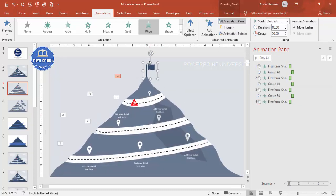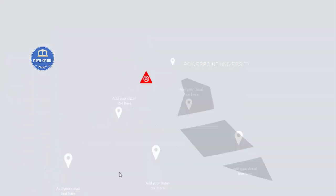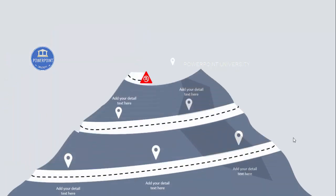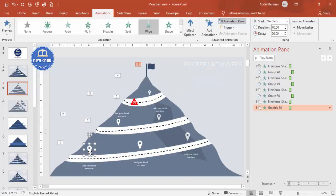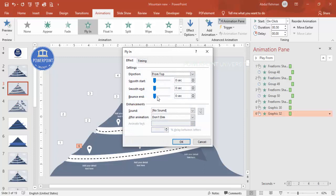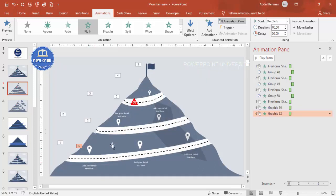For the flag, apply a Wipe effect as well so it appears after the mountain is complete. You can also use Fly In from Top for the flag. Double-click the animation to open its settings — if you want a Bounce End effect you can enable it and adjust the intensity. Depending on your requirement, choose whichever animation style suits your presentation best and apply it to the flag element.